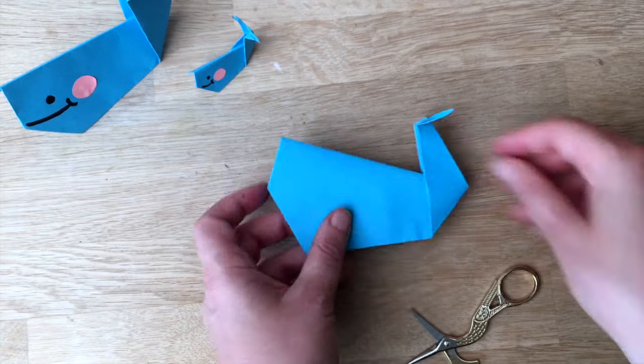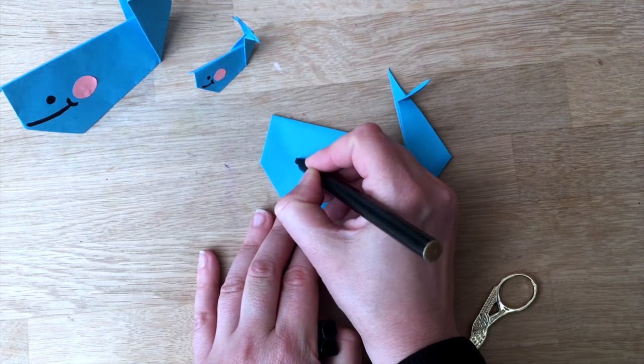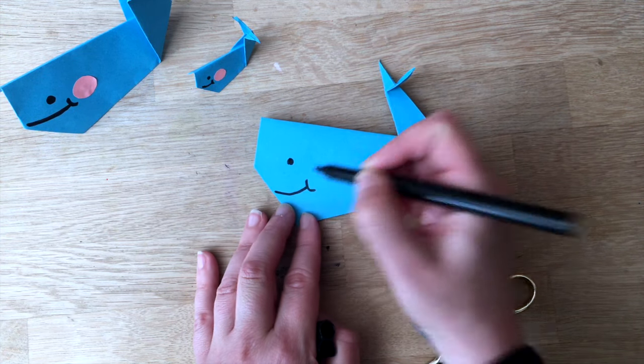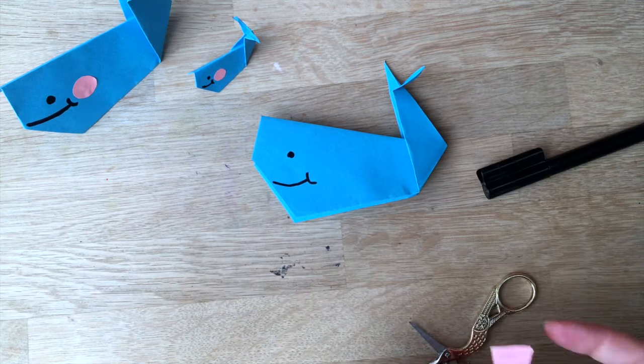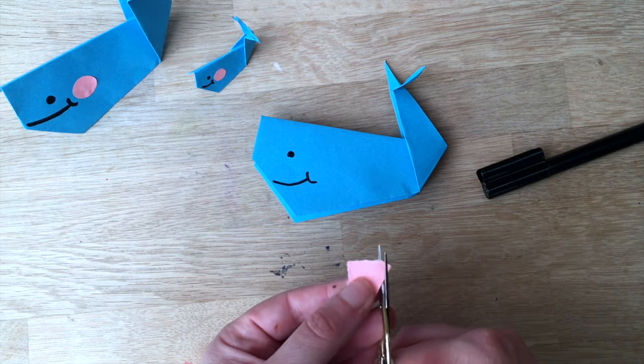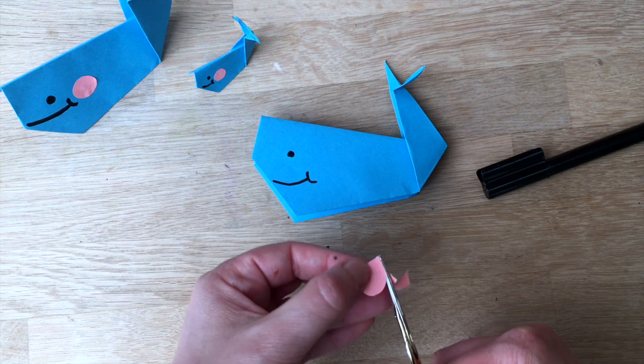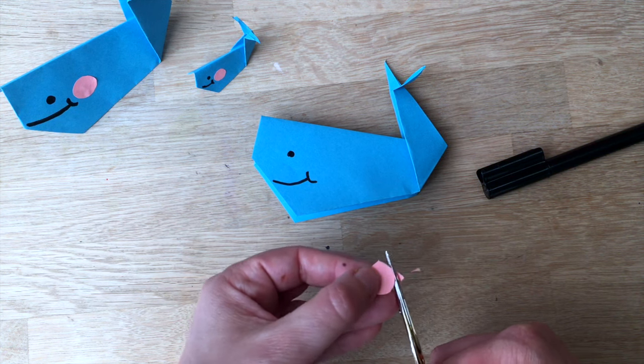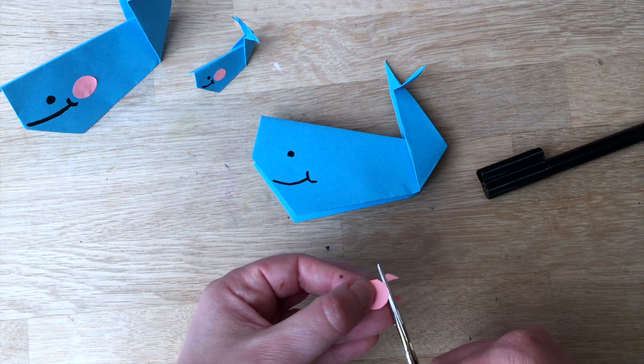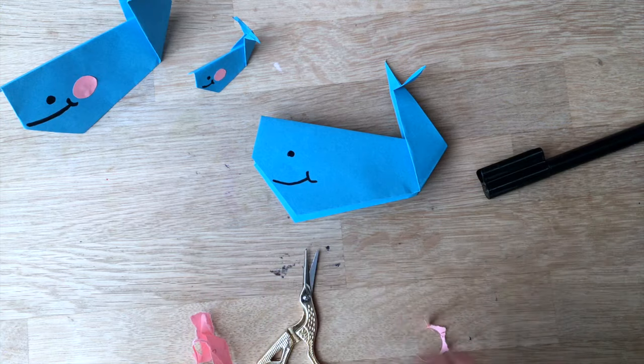Fold these down, draw a little face and you're done. Now my ones, just because I happen to see this little piece of pink paper lying around, I decided to cut out a little circle and stick it on. But of course you don't have to do that. I'm just going to do that because I can and it was lying there, and I thought it looks cute. That's how simple it is to make a little paper whale.